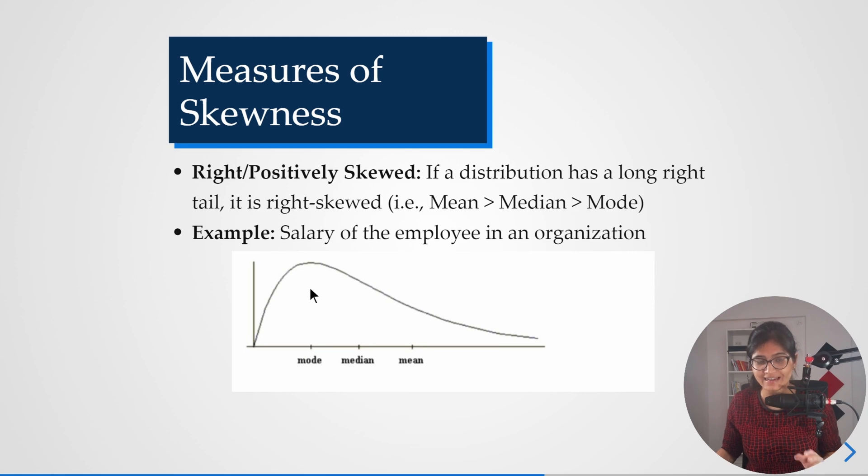Here if you observe, mode is having the highest frequency which is at the extreme left, then comes median, and then comes mean. Here the value of the mean is greater as comparable to median. Median is greater as comparable to mode. Just the reverse relation of what we have learned from left skewed distribution.